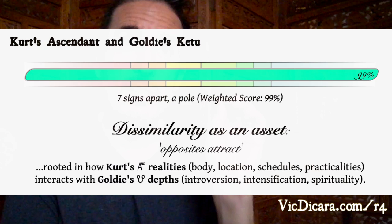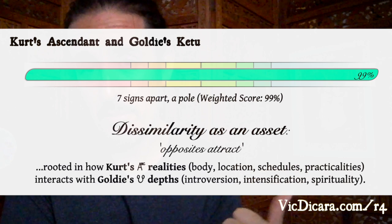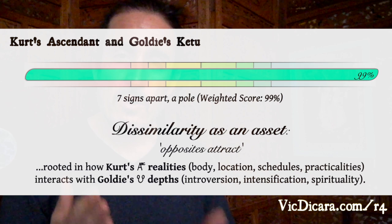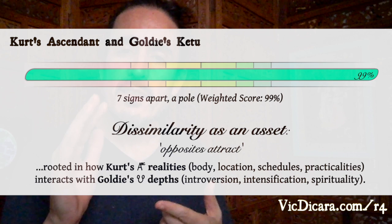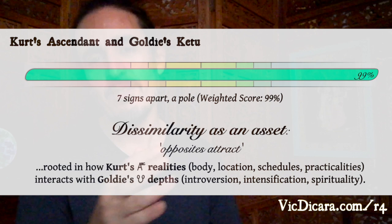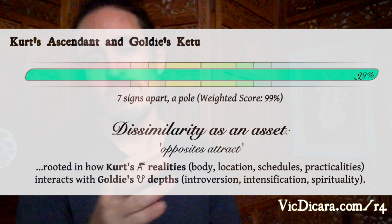Let's be specific and look at Goldie Hawn and Kurt Russell. The most significant shape in their combined charts — the one with the highest alignment intensity — is the pole formed between Goldie's Ketu and Kurt's Ascendant. The way I lay out the symbolic ammunition for this couple to understand what this means is like this, as you see on the screen. First, the shape itself — being a pole — is characterized as dissimilarity as an asset, which you could summarize as 'opposites attract.' The specific planets involved are Ketu and Ascendant. So this opposites-attract dynamic is rooted in how Kurt Russell's Ascendant interacts with Goldie's Ketu.